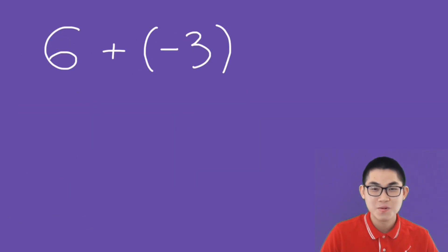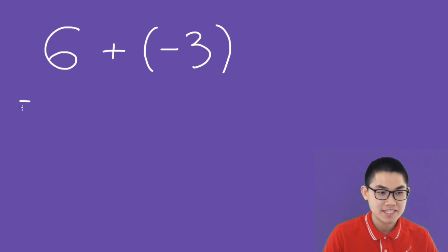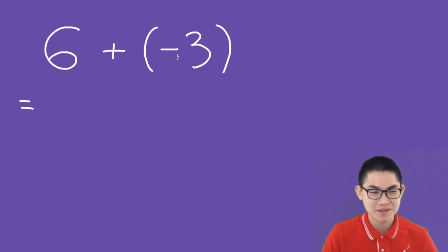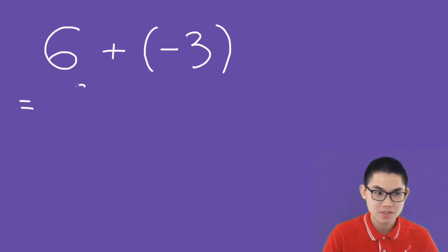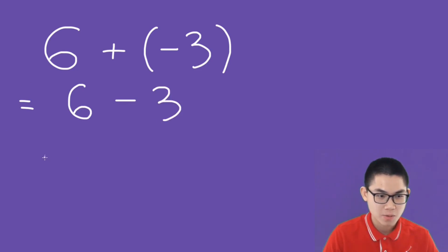What is 6 plus negative 3? Well, it's a plus negative number, so this will be the same as 6 minus 3, which is simply 3.